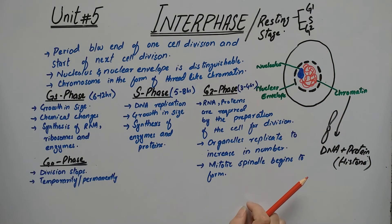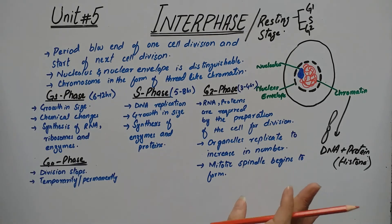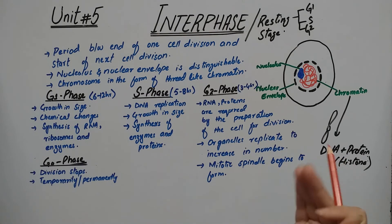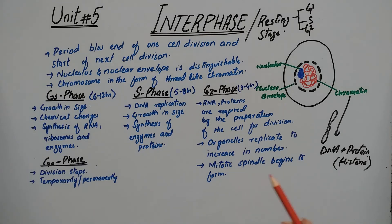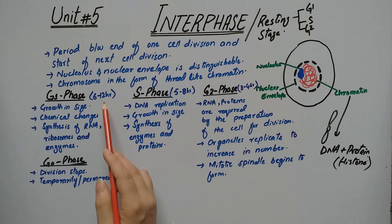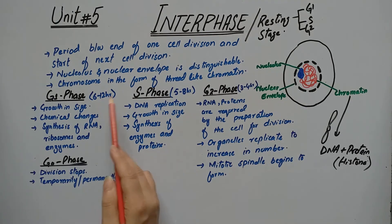G2 phase is the final phase and the last event of the whole interphase. The centrioles also replicate and move to opposite poles, where they will form rays and fibers that attach to the chromatids and help separate the chromosomes to opposite poles.